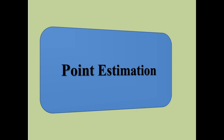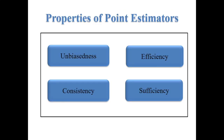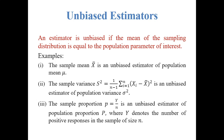Point estimation. There are four properties of a good point estimator: unbiasedness, efficiency, consistency, and sufficiency. We will discuss these four properties one by one. Unbiased estimators: an estimator is unbiased if the mean of the sampling distribution is equal to the population parameter of interest.